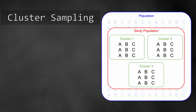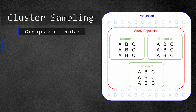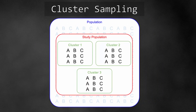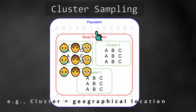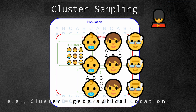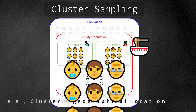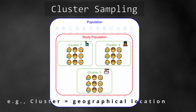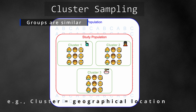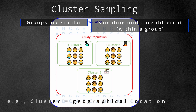On the other hand, cluster sampling uses clusters, which are homogenous groups composed of heterogeneous sampling units inside each cluster. For example, a cluster can be based on geographical location where cluster 1 is people living in New York, cluster 2 in London, and cluster 3 in Beijing. Each cluster is similar to the other clusters in that the sampling units inside are all diverse and well-distributed. For instance, New York, London, and Beijing are each composed of people of varied age groups, but within a cluster, each sampling unit is different from the others.